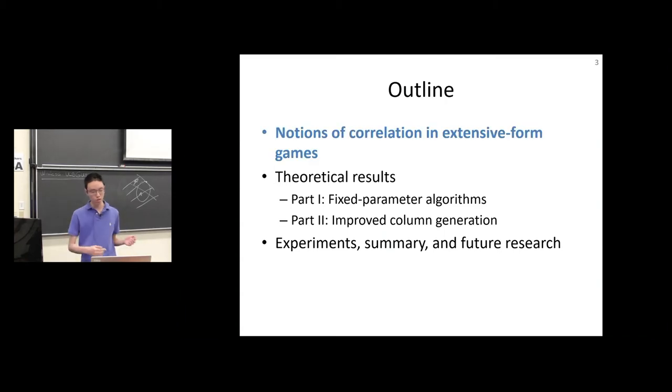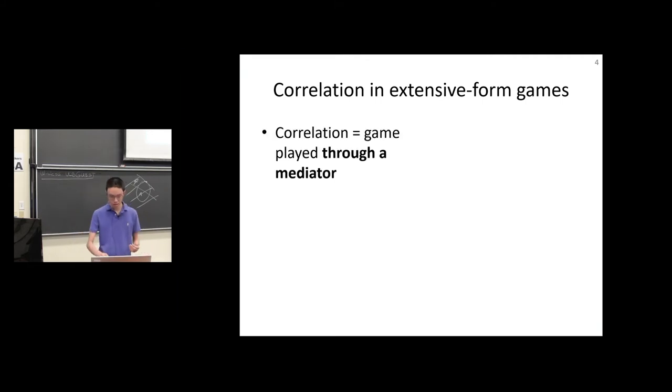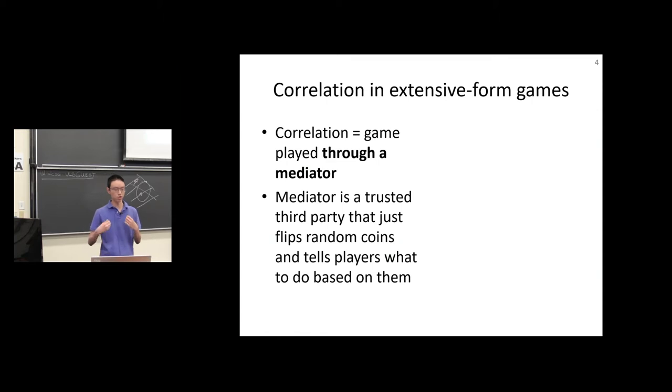What is the right notion of correlation in extensive form games? The best way to think about correlation is to think about a game played through a mediator. The mediator is just a trusted third party that doesn't actually do anything except flip random coins and send messages. The mediator has no power except to tell the players what to do. The players don't need to listen to the mediator. The mediator can only send messages. Here's our mediator.